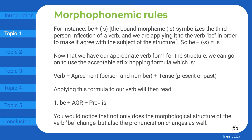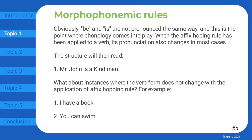Now that we have our appropriate verb form for the structure, we can go on to use the acceptable affix hopping formula, which is: verb plus agreement (person and number) plus tense (present or past). Applying this formula to our verb will then read: B plus AGR plus PRES equals 'is'. You would notice that not only does the morphological structure of the verb change, but also the pronunciation changes as well. Obviously, 'be' and 'is' are not pronounced the same way, and this is the point where phonology comes into play. When the affix hopping rule has been applied to a verb, its pronunciation also changes in most cases.